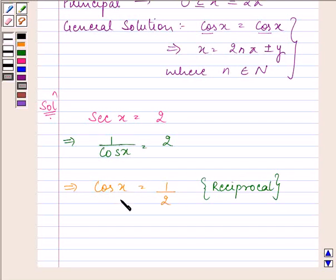Now, what is the value of x when cos x is 1 by 2? That comes out to be cos π/3 equals 1 by 2.